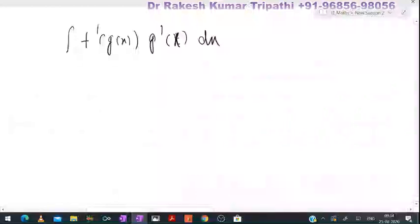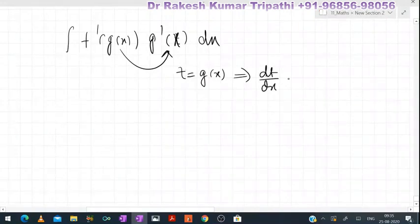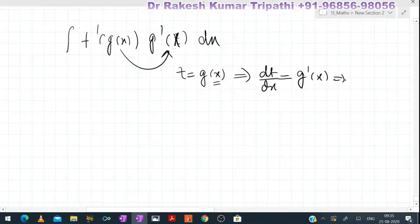We have f'(g(x))·g'(x), where you can see that the derivative of g(x) is g'(x). So we put t = g(x). As soon as we differentiate the function with respect to the independent variable x, dt/dx = g'(x), which we can write as dt = g'(x)dx.